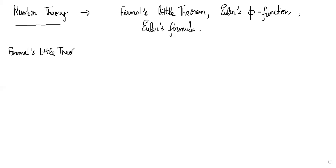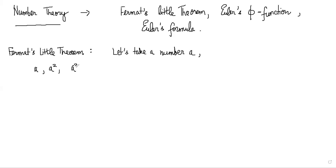So what is Fermat's Little Theorem all about? Basically this is going to tell you that if you take a number and its powers — powers of a number — let's take a number a and start raising it to its powers. So we look at a, a squared, a cubed, a to the fourth, and so on, and look at it modulo p where p is a prime number.